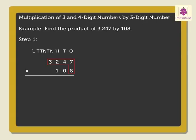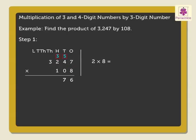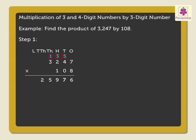Let us multiply 3,247 by the ones digit of the multiplier, that is 8. 7 into 8 is equal to 56. 4 into 8 is equal to 32, plus the carried over 5, is equal to 37. 2 into 8 is equal to 16, plus the carried over 3, is equal to 19. And lastly, 3 into 8 is equal to 24, plus the carried over 1, is equal to 25. We will call 25,976 as the first partial product.